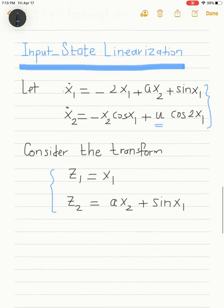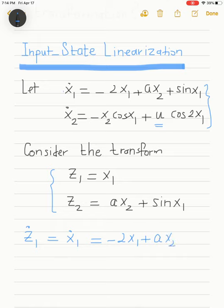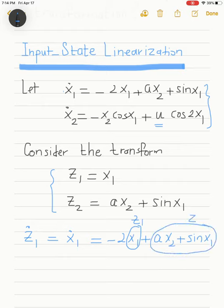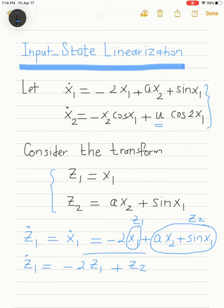To do that, I take the derivative: z1-dot equals x1-dot, which from the original system is −2x1 + ax2 + sin(x1). Since x1 = z1 and ax2 + sin(x1) = z2 from the transformation definition, we can write z1-dot = −2z1 + z2. This is the first state variable equation in the new coordinates.